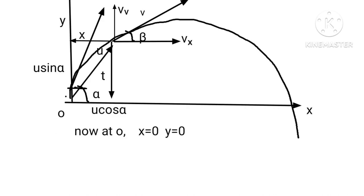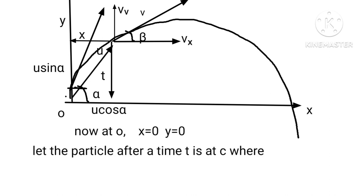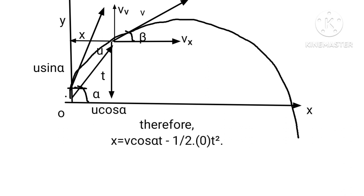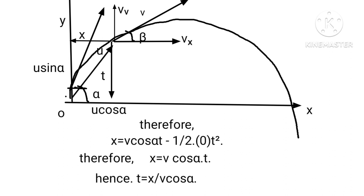Now at O, x equals 0 and y equals 0. Let the particle after a time t be at point C, where the horizontal component is V cos α and vertical is V sin α. Since ax equals 0, therefore x equals V cos α · t minus (1/2)·0·t², which gives x equals V cos α · t. Hence t equals x upon V cos α.